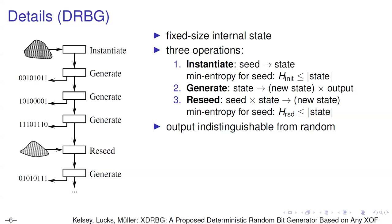A DRBG has a fixed-size state and supports three operations. First, Instantiate: takes a seed (the data blob) and generates the initial state. Second, Generate: takes the state and produces output, also generating a new state. Third, Reseed: takes a new seed and the current state and generates a new state. For Instantiate we require at least h_init bits of min-entropy, and for Reseed at least h_reseed bits of min-entropy.